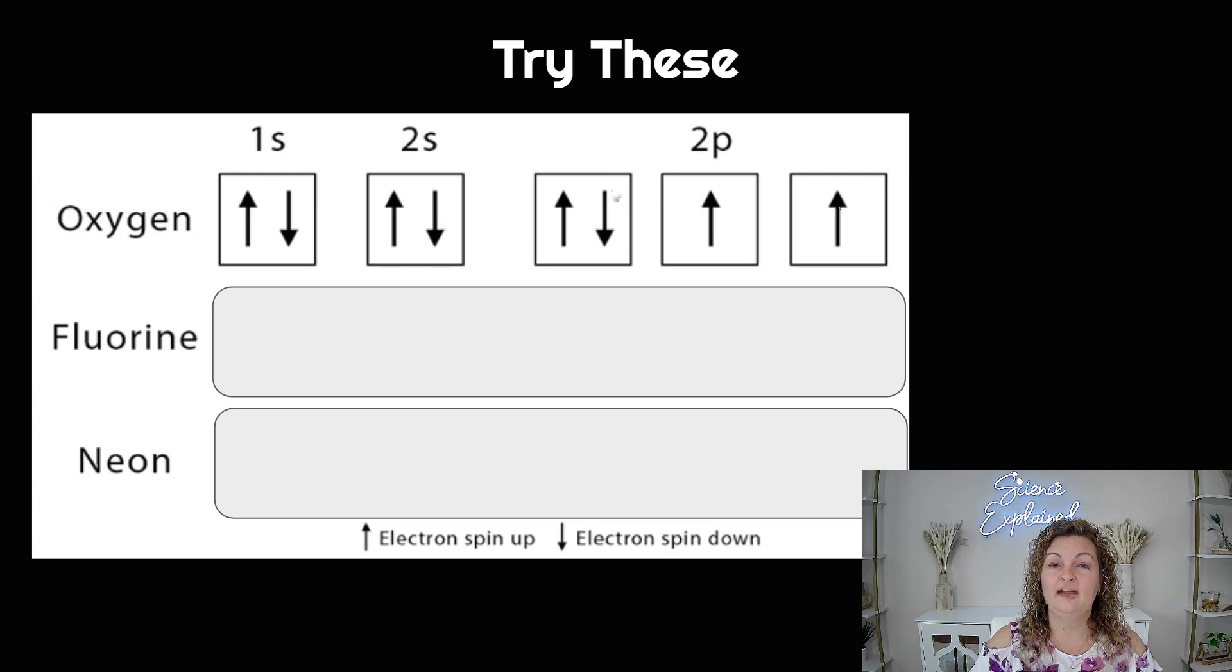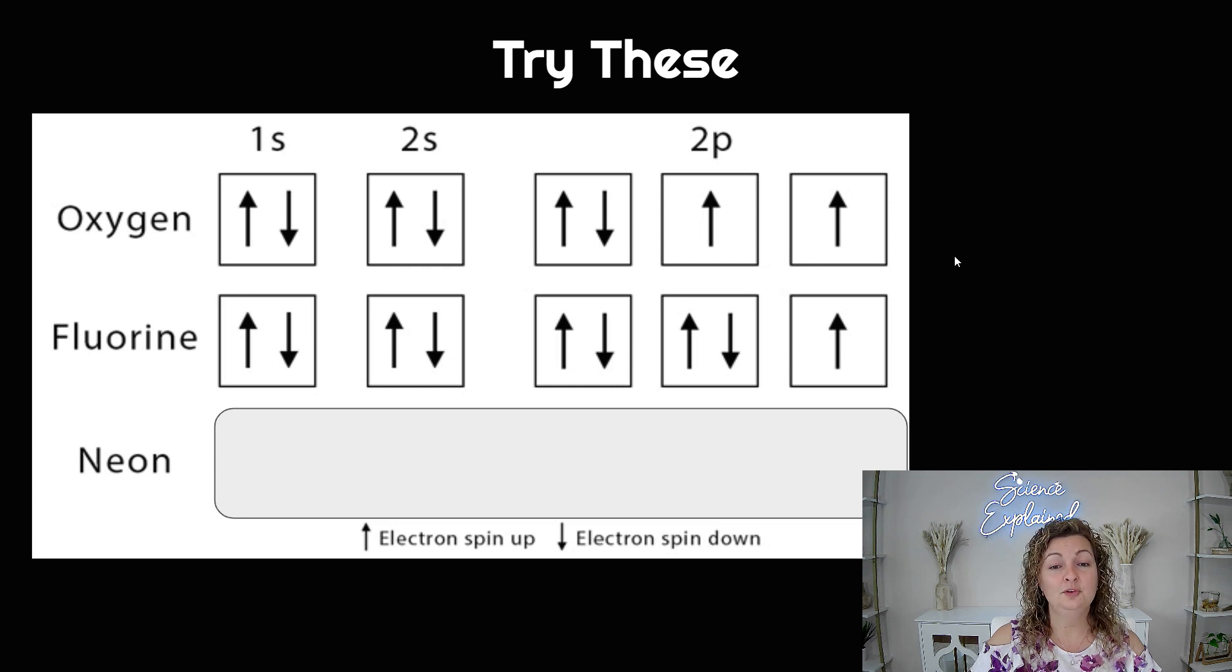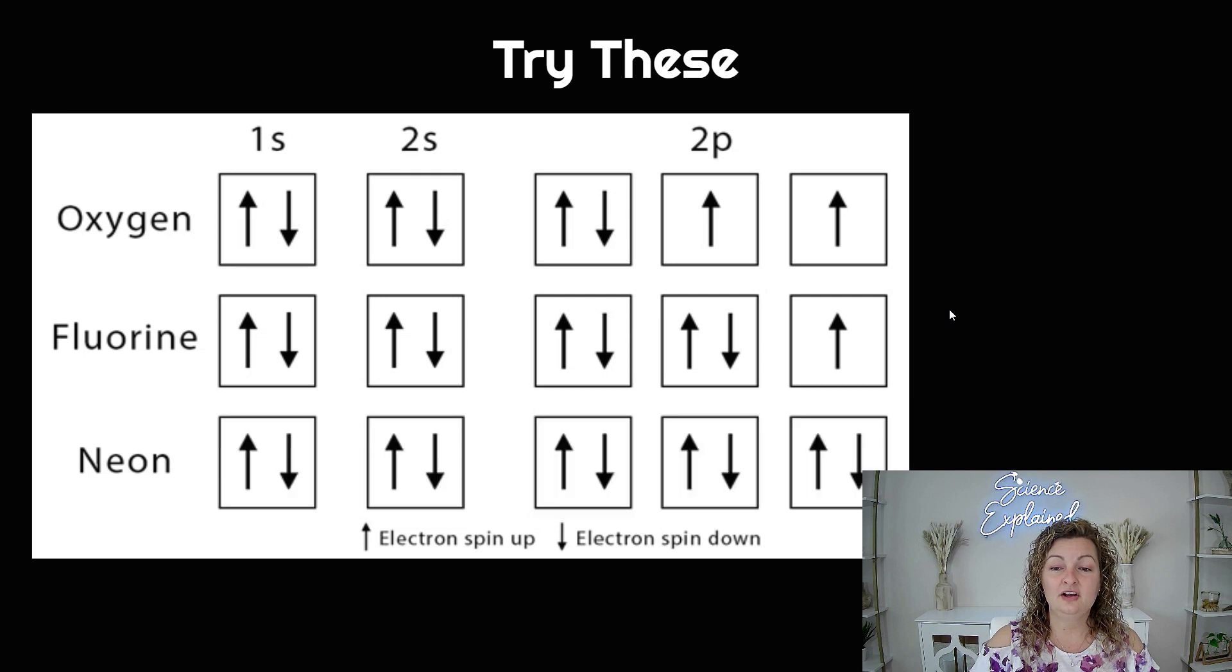So in order to write this correctly, we need to go up, up, up, and then down. So make sure you're writing your arrows in the right box and that they're going in the right direction. So let's look at fluorine. Fluorine, we just have one more electron. So our 1s and 2s should look the same. And in our 2p, we're going to go up, up, up, and then down, down. So the last box should have one free electron that's not there yet.